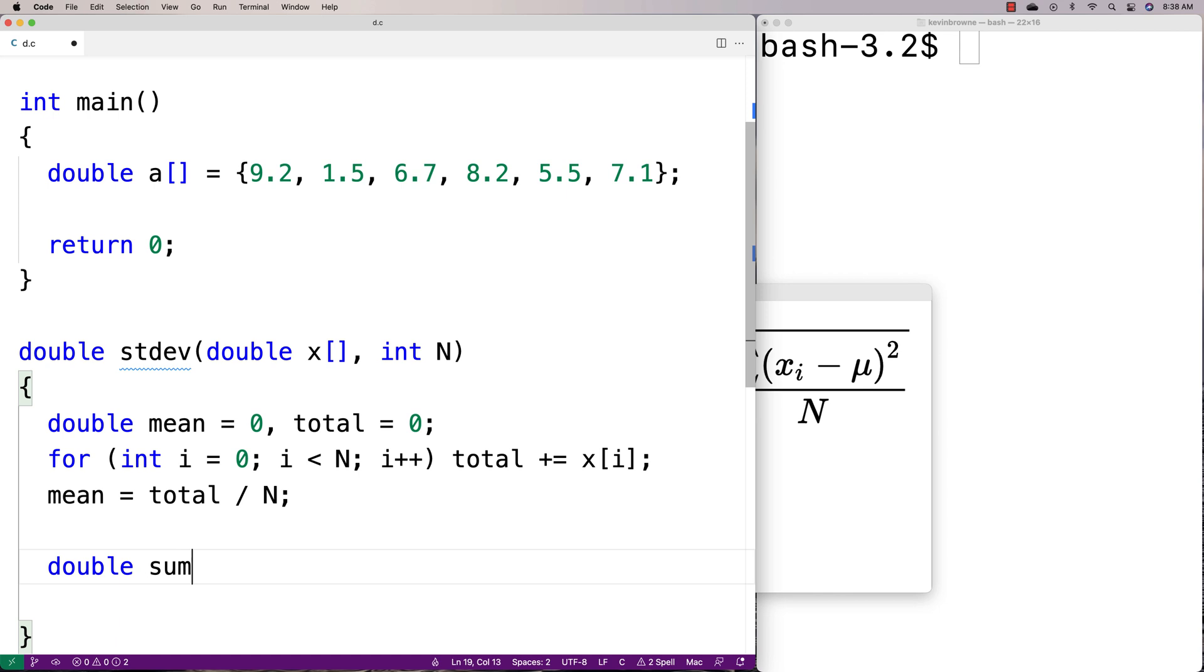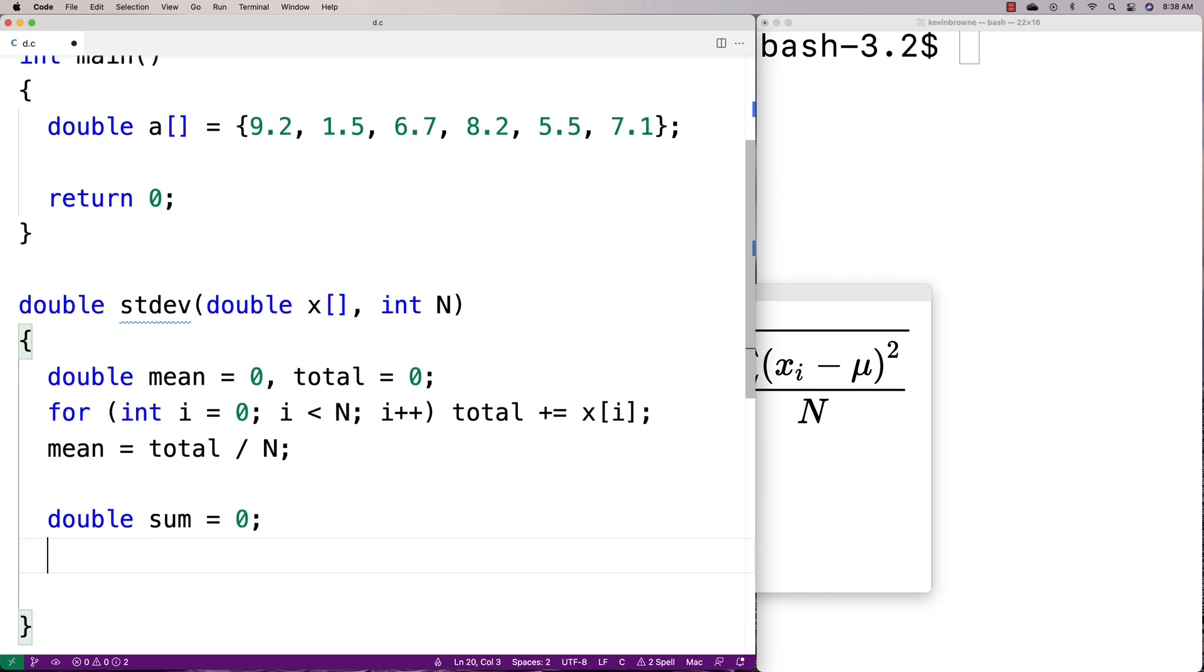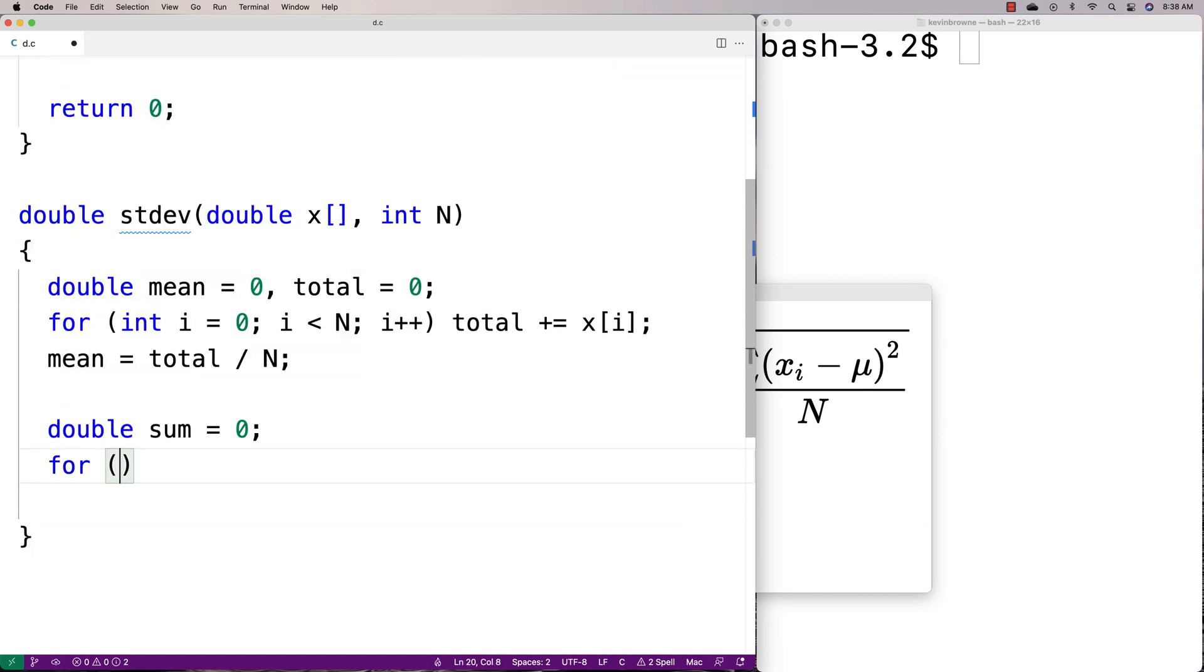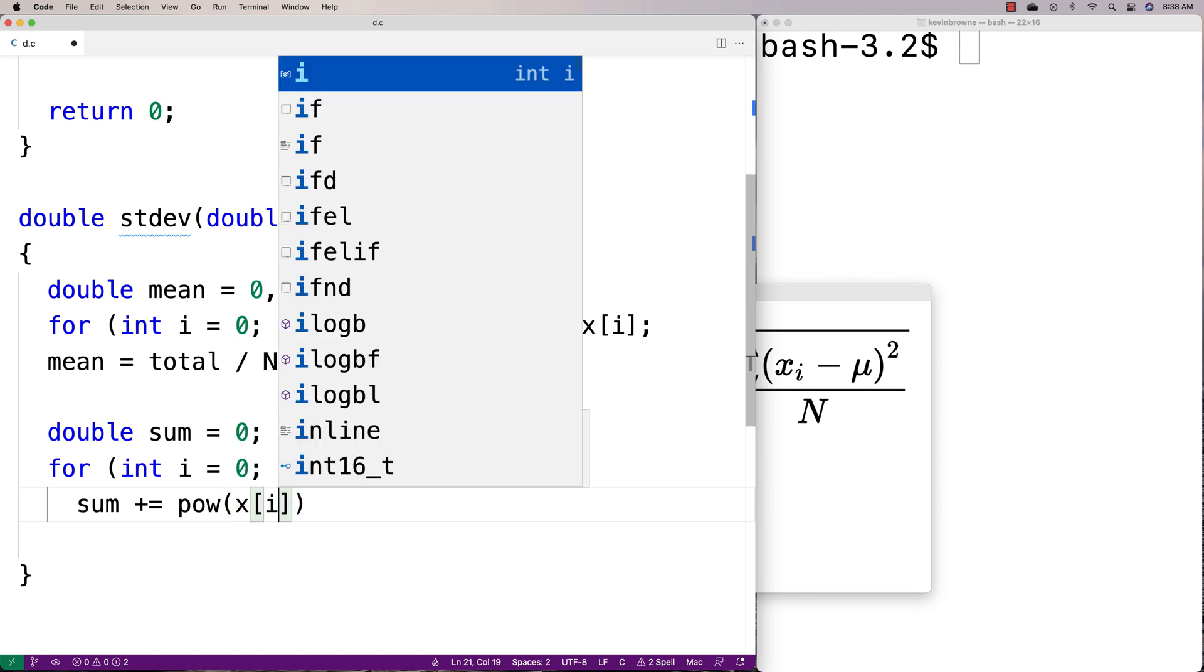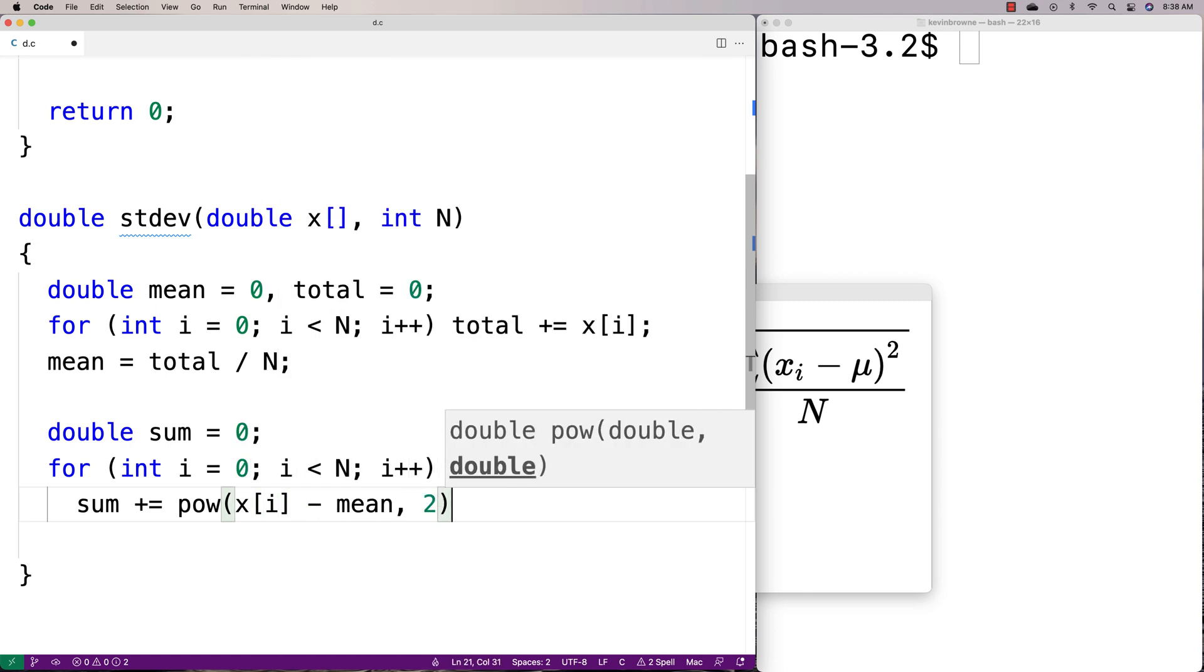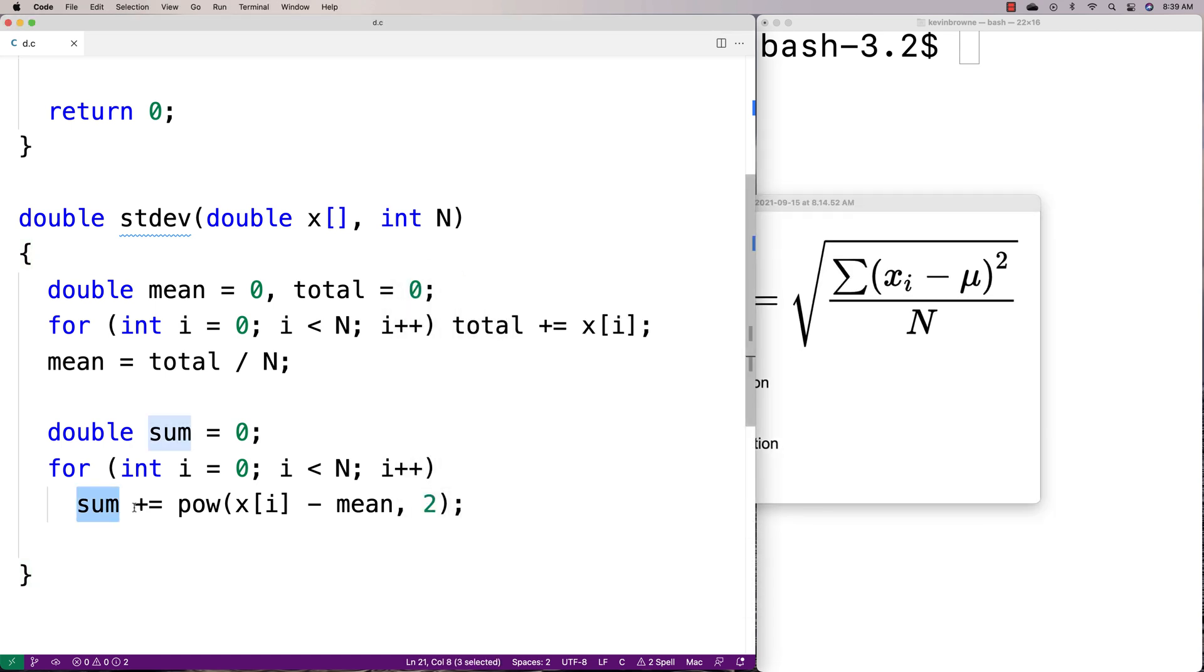We'll declare double sum equals zero because we're computing the result of this summation. Then for int i equals zero, i less than n, i++, we'll loop through each element in the array. We'll say sum plus equals pow(x[i] minus mean, 2).